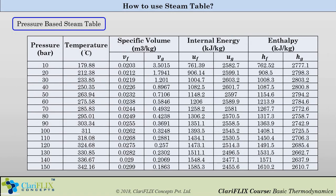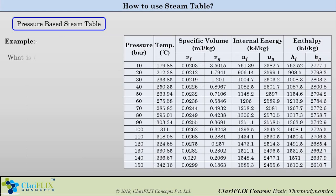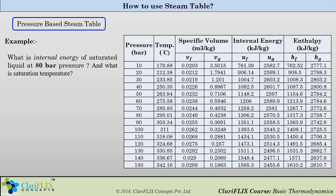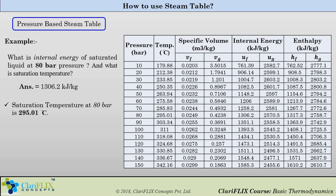Now let us understand the pressure-based steam table. The first column gives pressure, next is saturation temperature corresponding to that pressure, followed by specific volume, internal energy, and enthalpy, each with Vf/Vg, Uf/Ug, and Hf/Hg columns. For example, at 80 bar pressure, the internal energy of saturated liquid Uf is 1306.2 kJ/kg, and the saturation temperature is 295.01°C.